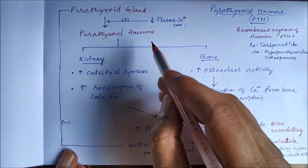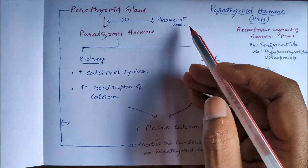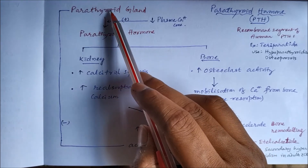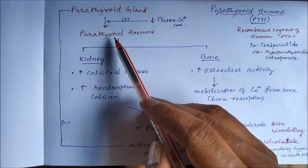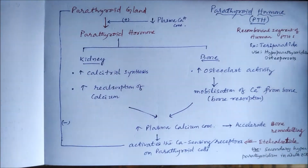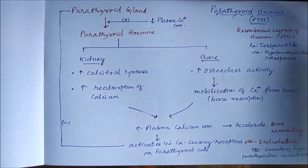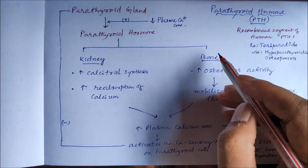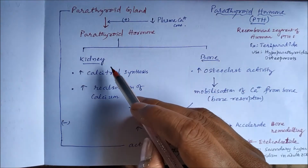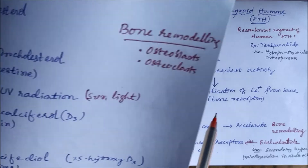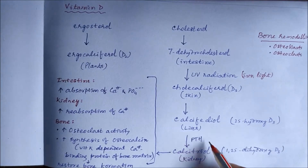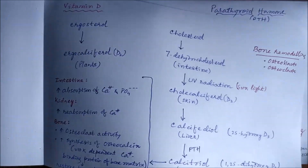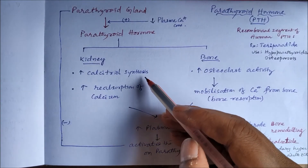When there is a decrease in plasma calcium concentration, the parathyroid gland is stimulated to secrete parathyroid hormone. Parathyroid hormone acts on the kidney and bone. In the kidney, it increases calcitriol synthesis — calcifediol is converted to calcitriol in the presence of parathyroid hormone — and it also increases the reabsorption of calcium.